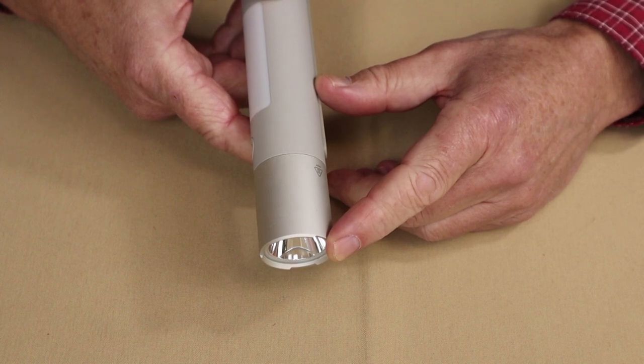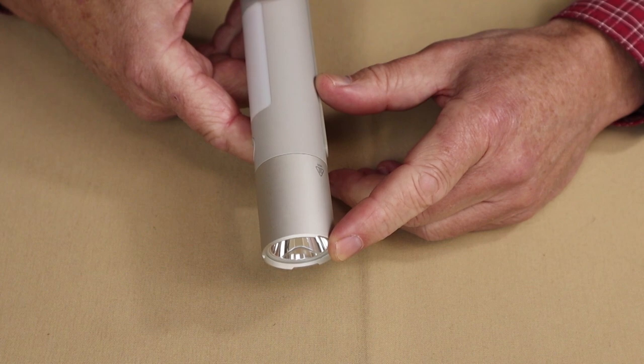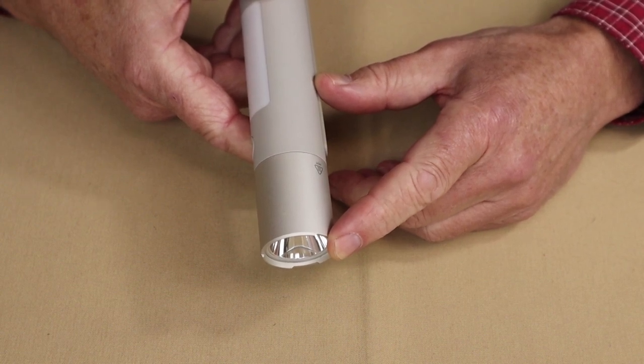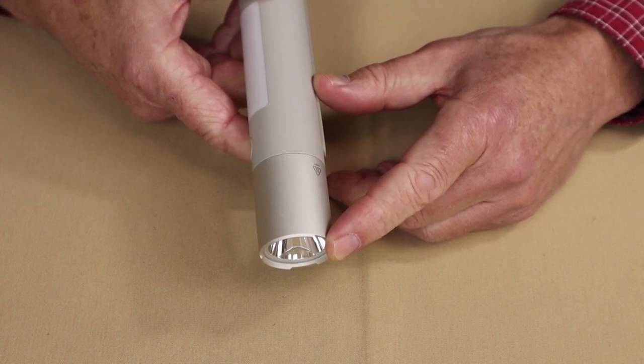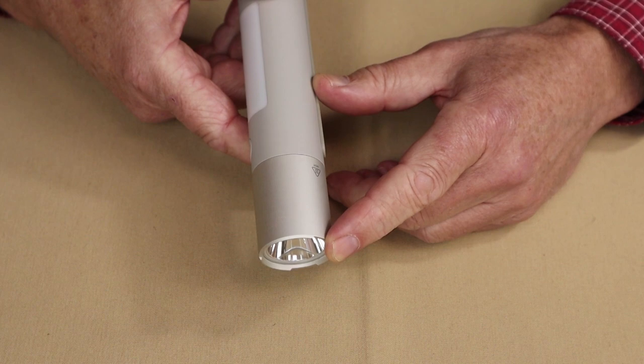It does have a strobe which also runs at 1000 lumens, running for two hours, which strangely enough they give the beam cast of 210 meters. And it has an SOS mode which has a lumen setting of 30 and will run for 80 hours with a beam cast of 20 meters.